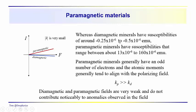The difference between paramagnetic and diamagnetic is the difference between attractive and opposing — positive and negative susceptibility. Diamagnetic materials have negative susceptibilities that are very small. Paramagnetic susceptibilities are positive, also very small, but much larger in an absolute sense — about 70 to 320 times as large. Paramagnetic minerals generally have an odd number of electrons, and atomic moments generally tend to align with a polarizing field.